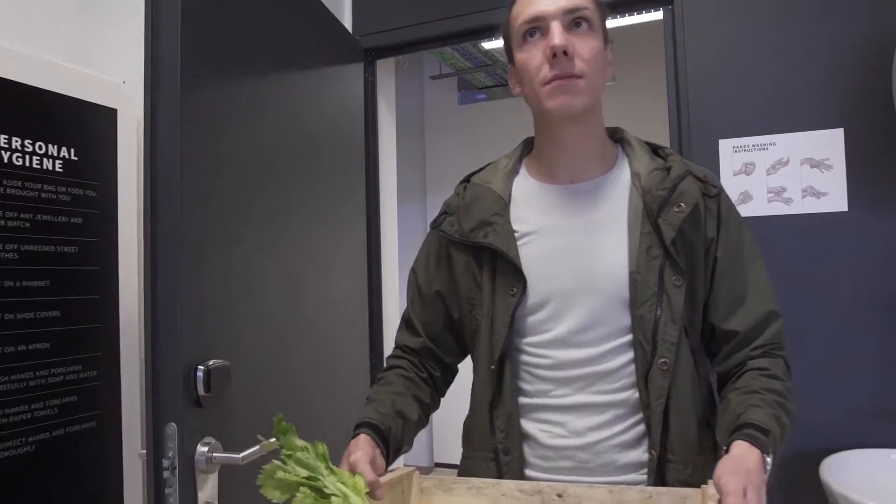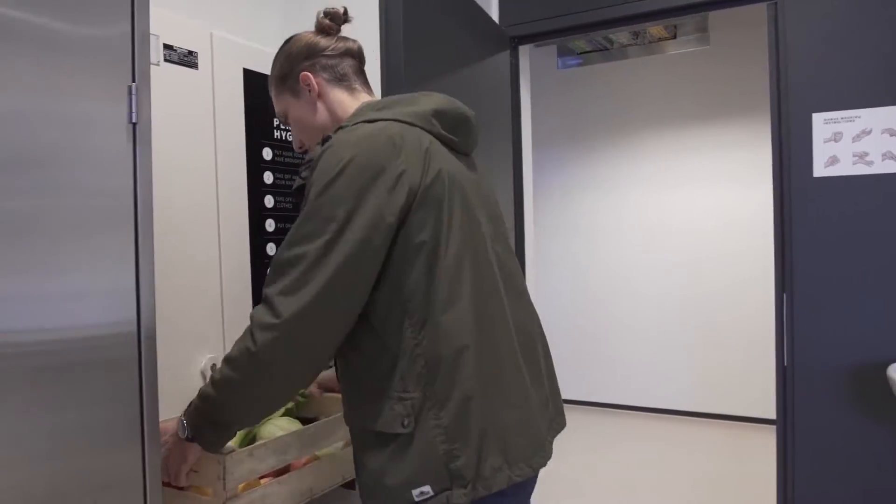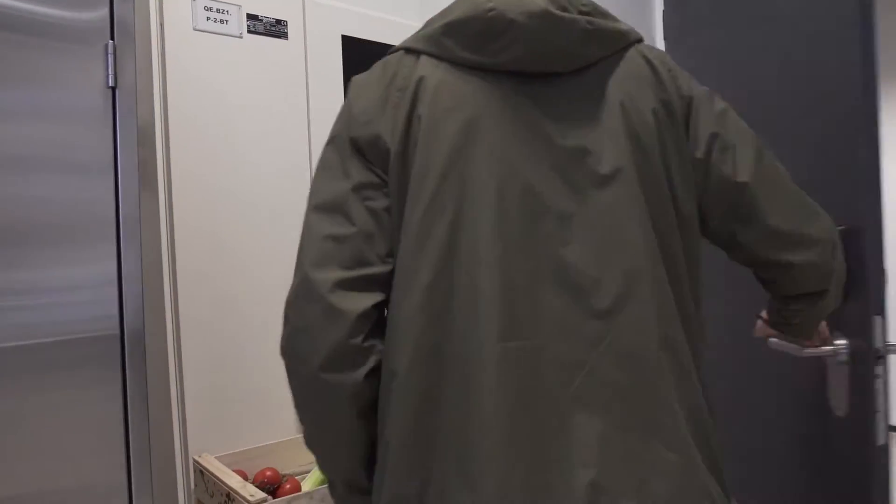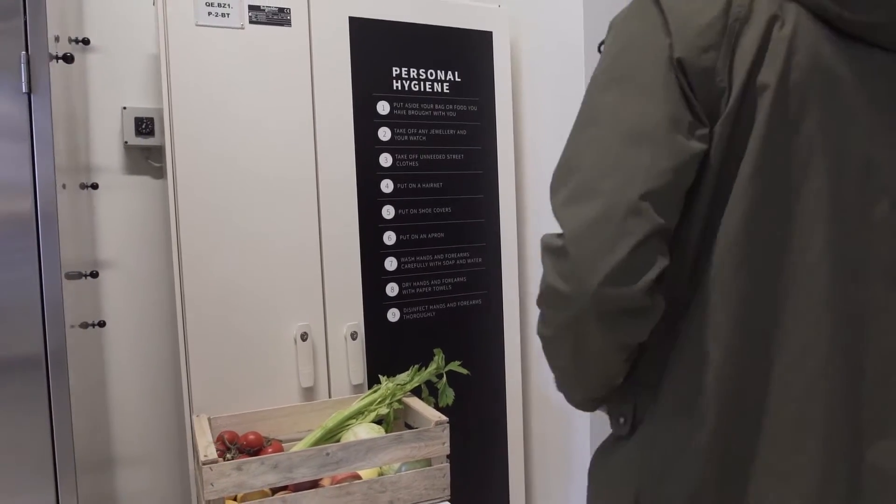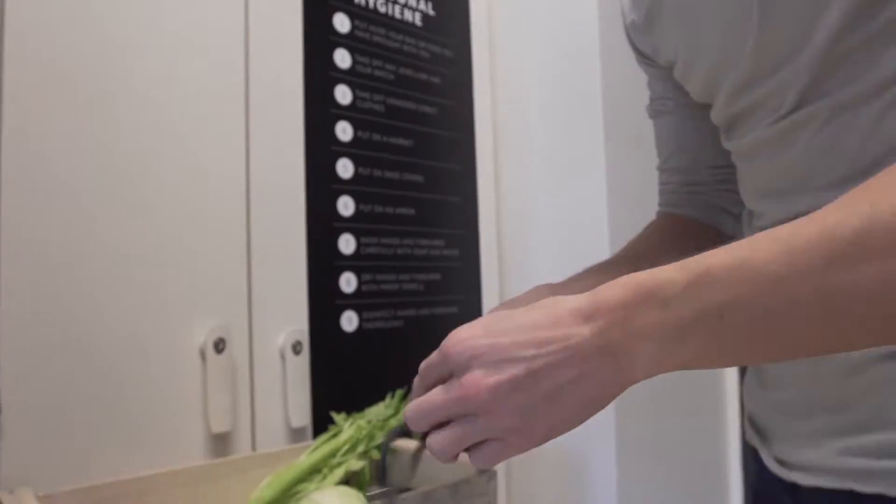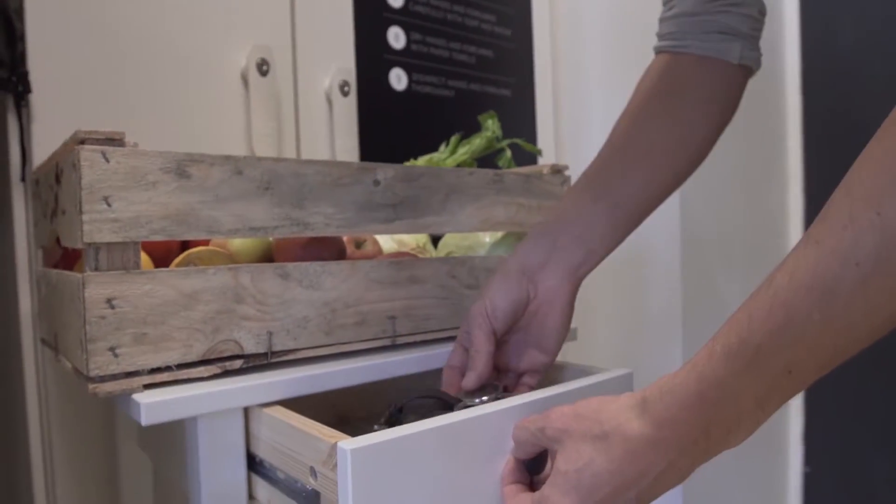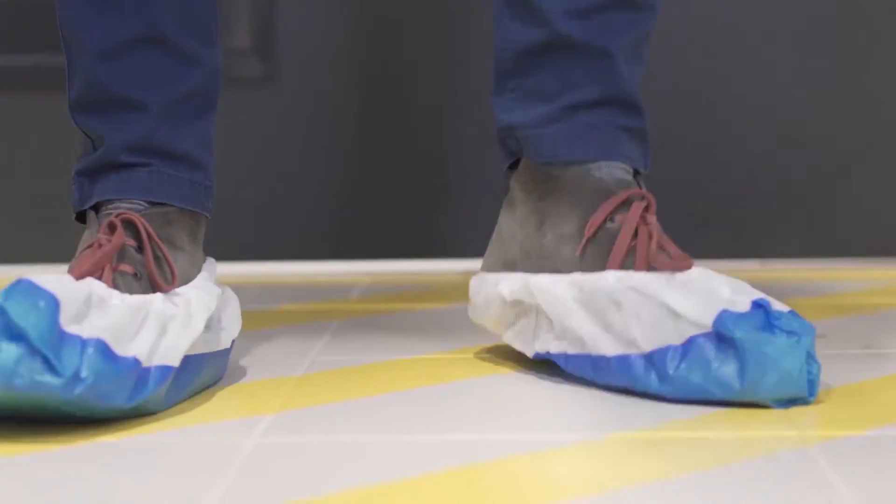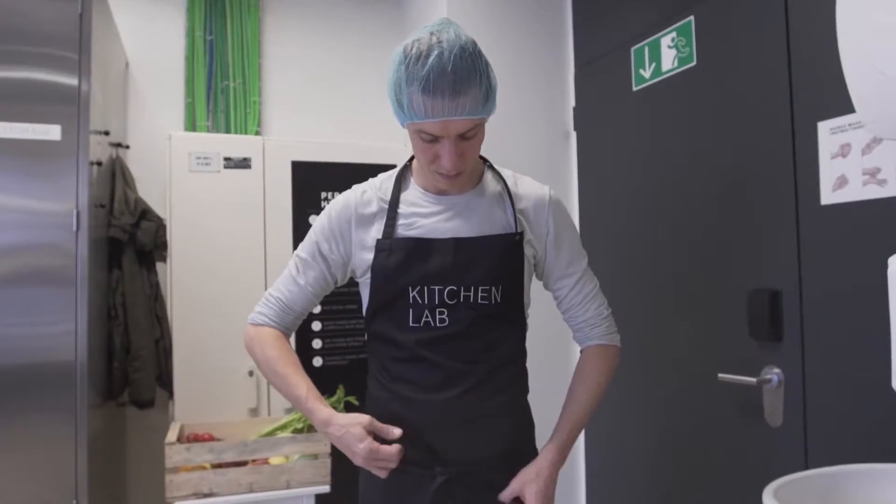The first step is to pass through the hygiene lock. The hygiene precautions required here are always the same. Put down any food you have brought with you and remove any unwanted clothing, bags, watches and jewelry. On the trolley you can find hairnets, overshoes and aprons. Please put these on.